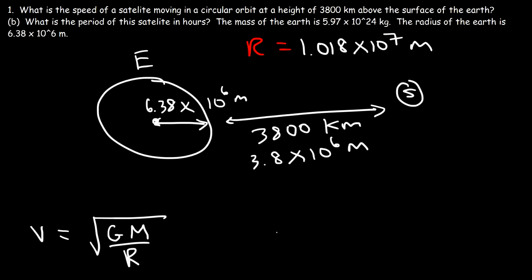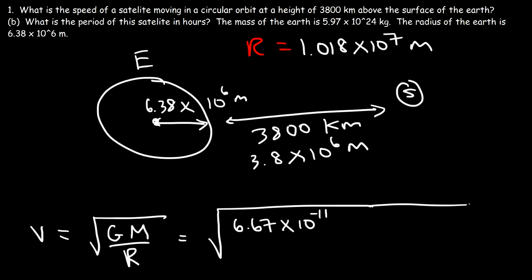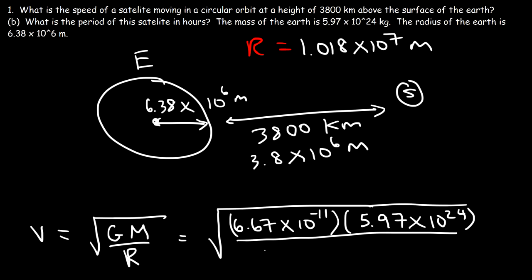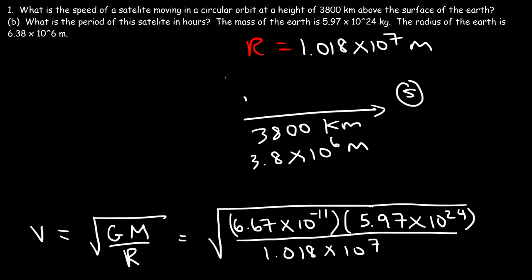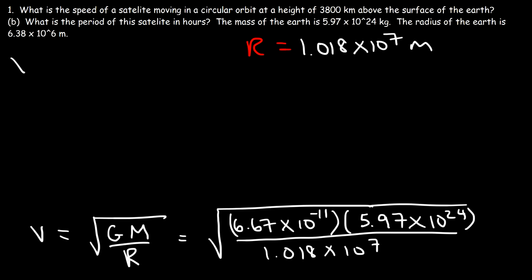R is the distance between the center of the Earth and the center of the satellite. Now we can use the formula: G is 6.67 times 10 to the minus 11, multiplied by the mass of the Earth which is 5.97 times 10 to the 24, divided by R which is 1.018 times 10 to the 7 meters. The speed of the satellite is 6,254.3 meters per second — that's how fast it's going.